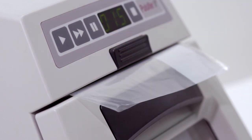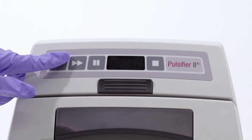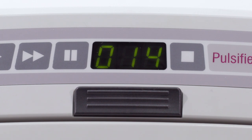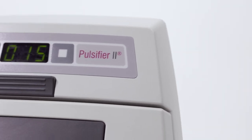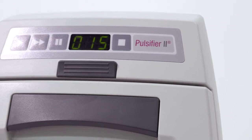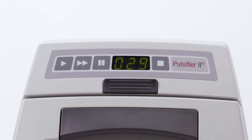Ensure it's fairly loose and close. The Pulsifier has four buttons. The play button allows you to start the standard 15-second pulsifying process. The stop button allows you to stop the cycle at any point. The pause button allows you to pause the process at any point. And the forward button allows you to choose the alternative extended 30-second program.